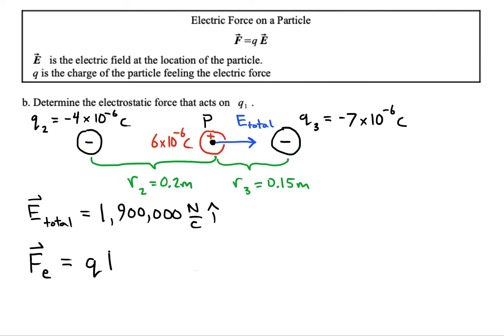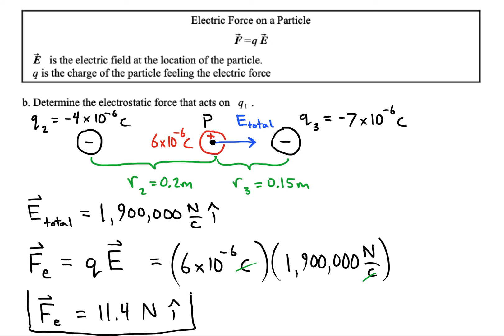So to solve this one all we have to do is multiply our six times ten to the minus six coulombs times our field strength. As you can see the coulombs here will cancel out and that'll leave us with newtons, and it'll act in the positive i direction. In other words, to the right.